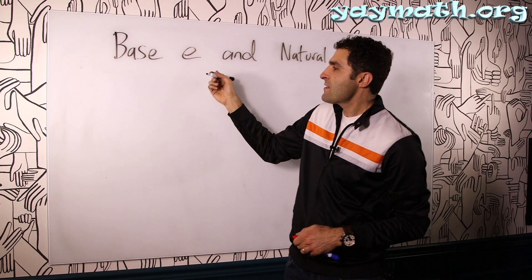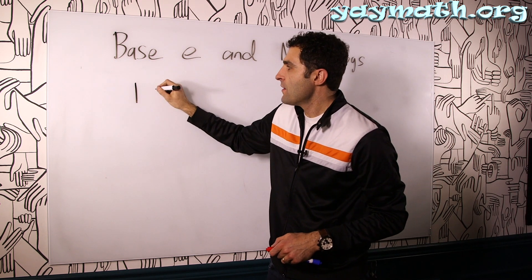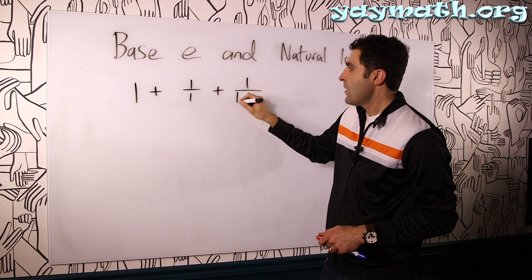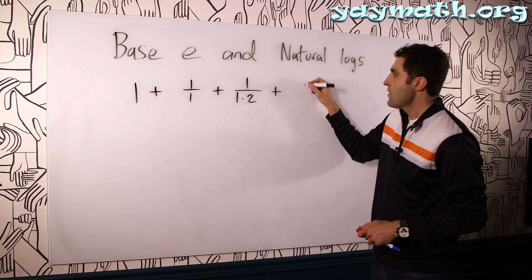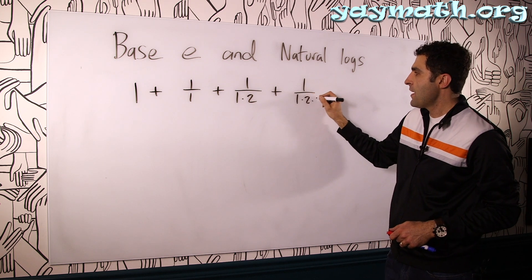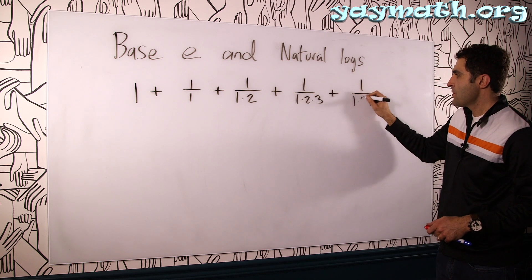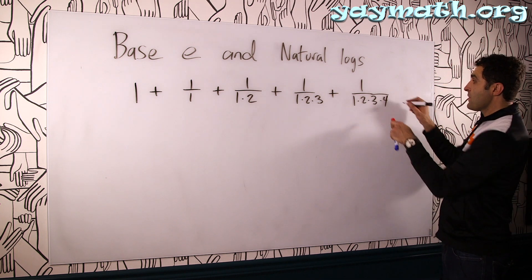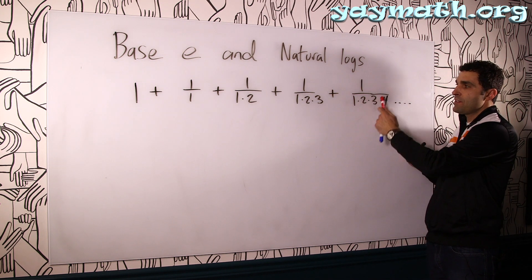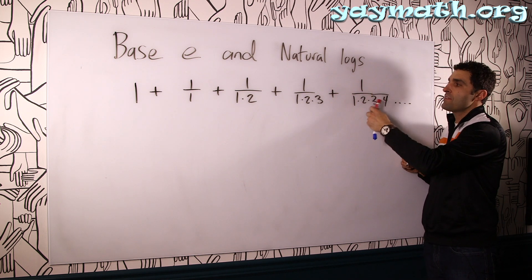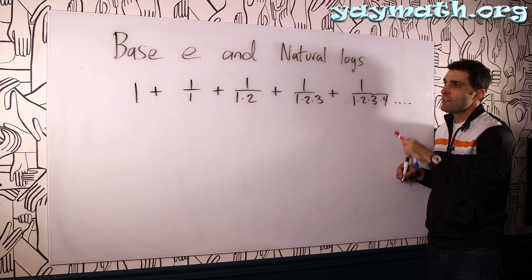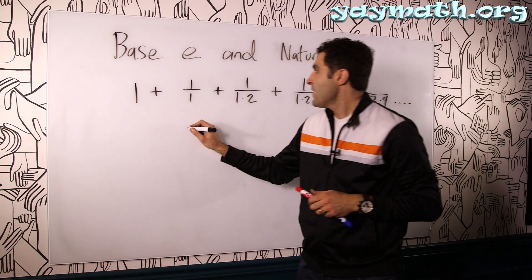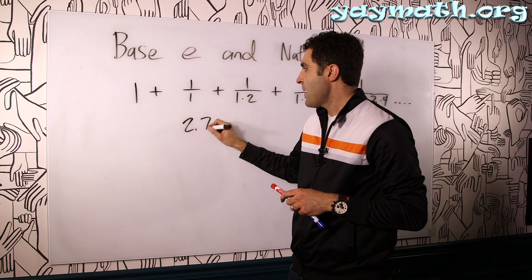So what E is, it's pretty fascinating. It's like 1 plus 1 over 1 plus 1 over 1 times 2 plus 1 over 1 times 2 times 3 plus 1 over 1 times 2 times 3 times 4. And you just go on for infinity and this fraction will eventually start to peter out and become very close to zero. It becomes a super small fraction. And this sum over time results in approximately 2.718.